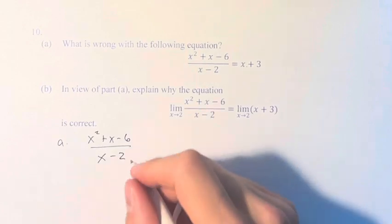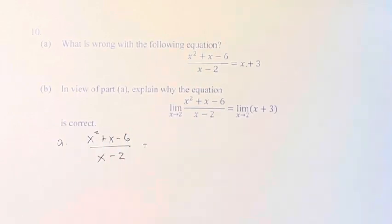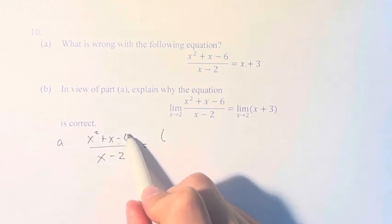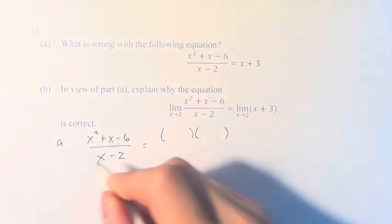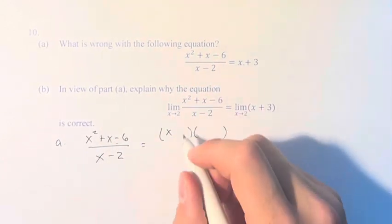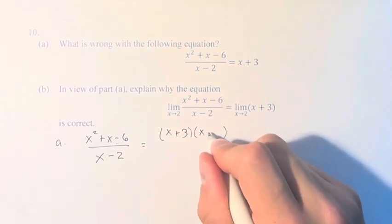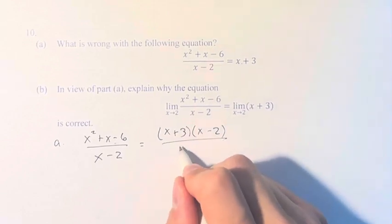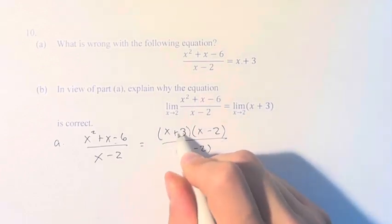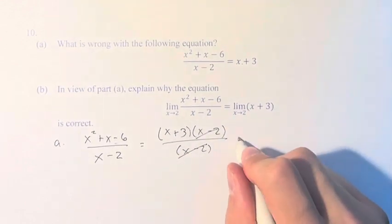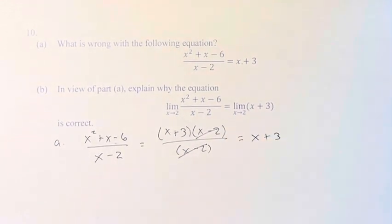the way we simplify this is we say, okay, let's factor this. So we need two numbers that multiply to negative 6 and add to 1. So that's 3 and negative 2. So we have x plus 3 times x minus 2 divided by x minus 2. So we cancel these out, and we get x plus 3.